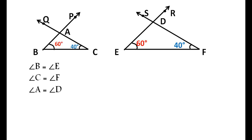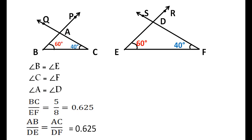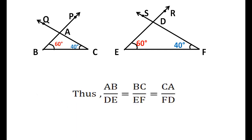The ratio of BC by EF is equal to 5 by 8, which is equal to 0.625. On measuring the other sides, we get AB by DE is equal to AC by DF, which is also equal to 0.625. Thus, AB by DE is equal to BC by EF is equal to CA by FD. That means, whenever three angles of one triangle are equal to three corresponding angles of another triangle, then they are similar by AAA similarity.